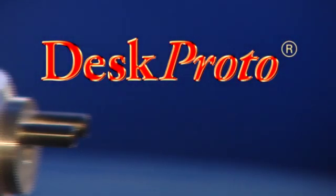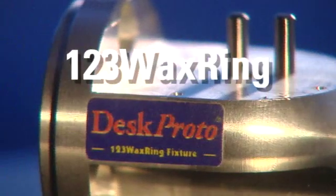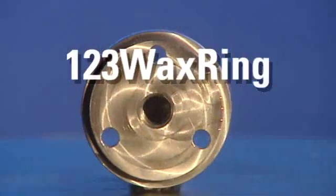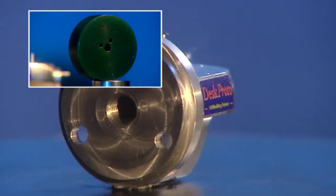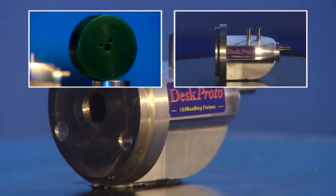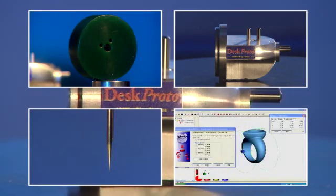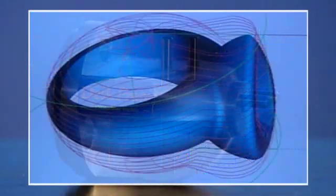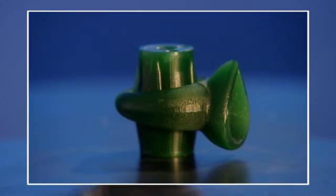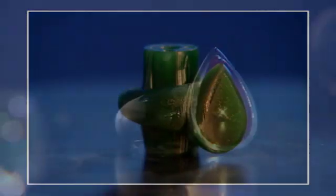DeskProto proudly presents the revolutionary 123 wax ring system. Using a pre-shaped wax disc, one fixture, one cutting bit and one zero point, you can convert a 3D CAD model into a wax prototype. All you need to do is fasten a screw three times.